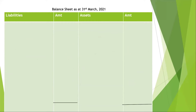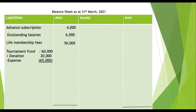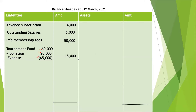Moving to the closing balance sheet: advance subscription of rupees 4,000 is a liability since income was received in advance. Outstanding salary is rupees 6,000. Life membership fees is rupees 50,000. Tournament fund: the opening donation for tournament fund was rupees 60,000 and additional donation received was rupees 20,000; after deducting tournament expenses of rupees 65,000, the balance is rupees 15,000. Capital fund is rupees 2,00,000 to which we add the surplus, giving a total balance sheet of rupees 3,53,000.